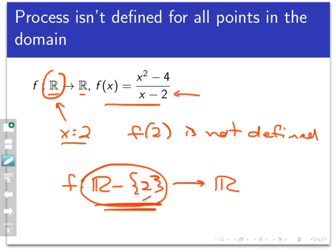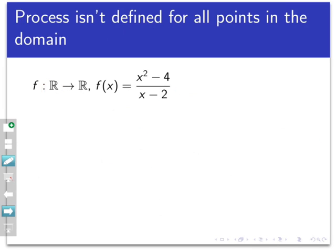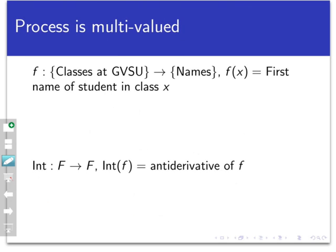Now, the final way we could fail to be a function is that you specify the domain and codomain. You specify the process. Every point in the domain has an output, but every point in the domain might have multiple outputs. This is the dreaded splitting of inputs into multiple outputs problem that we have skirted up until now. But here's a couple of examples where we actually hit this problem. For example, let's define a function or a process, not a function, called F that takes the set of all classes at Grand Valley State University, such as Math 210 Section 1, and sends it to the set of all names of students at Grand Valley State University.